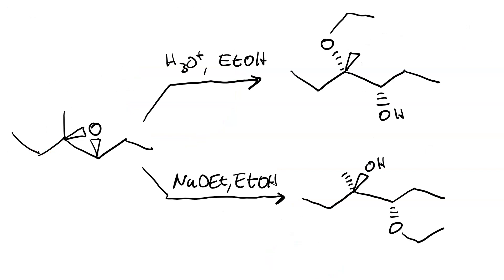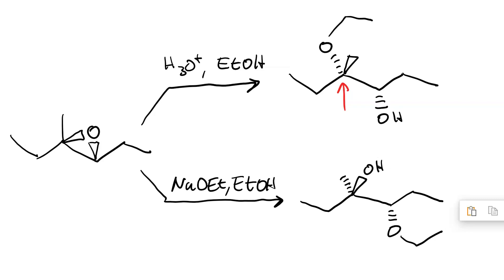So, which constitutional isomer you obtain is determined by what conditions you use. Acidic conditions will put the nucleophile in the more substituted position when it's a tertiary epoxide. Non-acidic conditions will put the nucleophile in the less substituted position. In acidic conditions with the tertiary ring carbon, electronics dictated the regiochemistry. In the non-acidic conditions, regiochemistry was dictated by sterics.